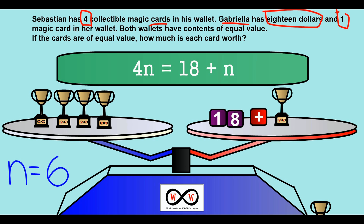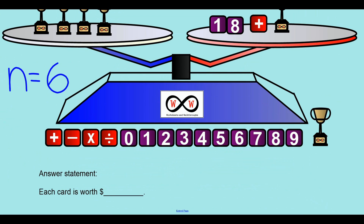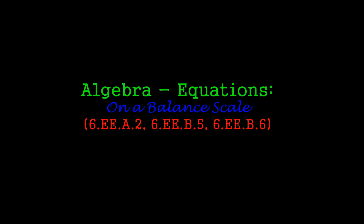We've solved this using numbers and pictures. Now let's use words. Going back to the original problem, our math goal was to figure out how much each card is worth. An answer statement would look like: 'Each card is worth __ dollars.' Inserting our value for n: each card is worth six dollars. That was a quick look at equations on a balance scale. Thank you for checking out worksheetsandwalkthroughs.com, and we'll see you again next time.